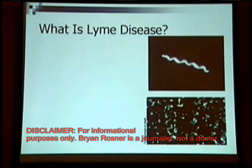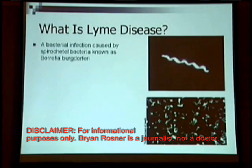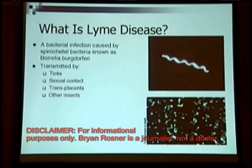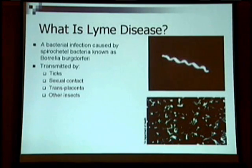So what exactly is Lyme disease? It is a bacterial infection caused by spirochete bacteria known as Borrelia burgdorferi. Lyme disease is transmitted by ticks — the kind of tick that you find on a mouse or a deer.